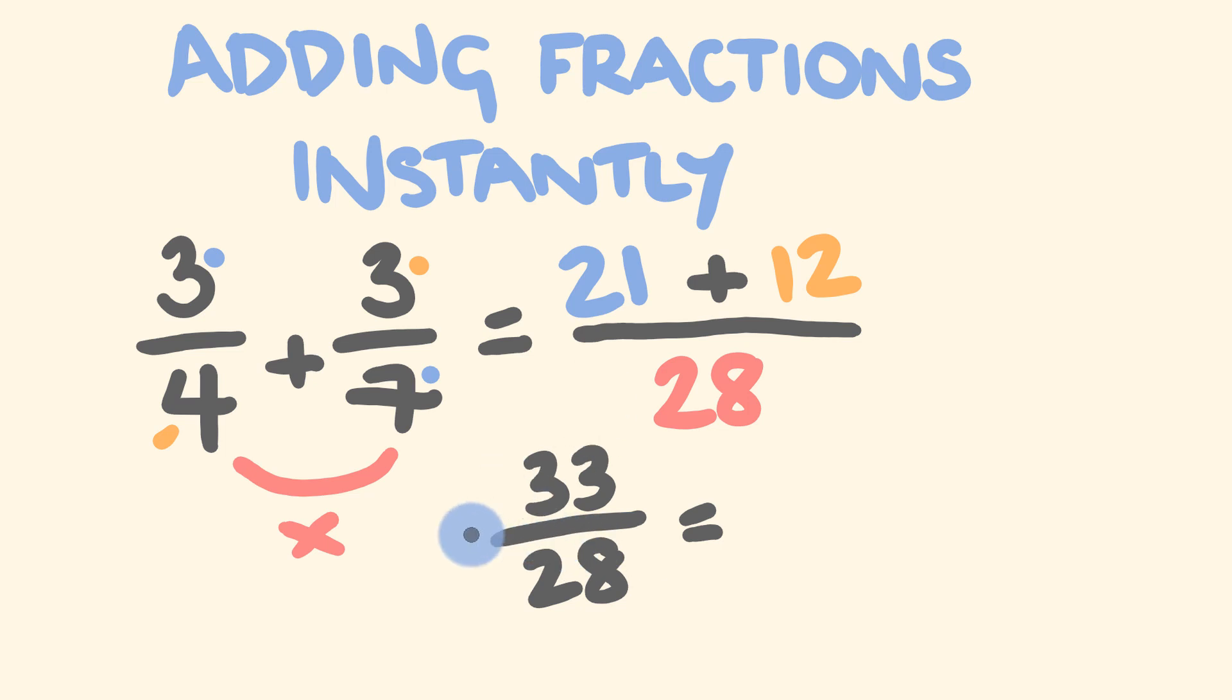Well, we can simplify this a bit further now. 33 divided by 28 is one and there is five left over. Five, that's going to go over 28. Anyway, what about a few examples for you to do.